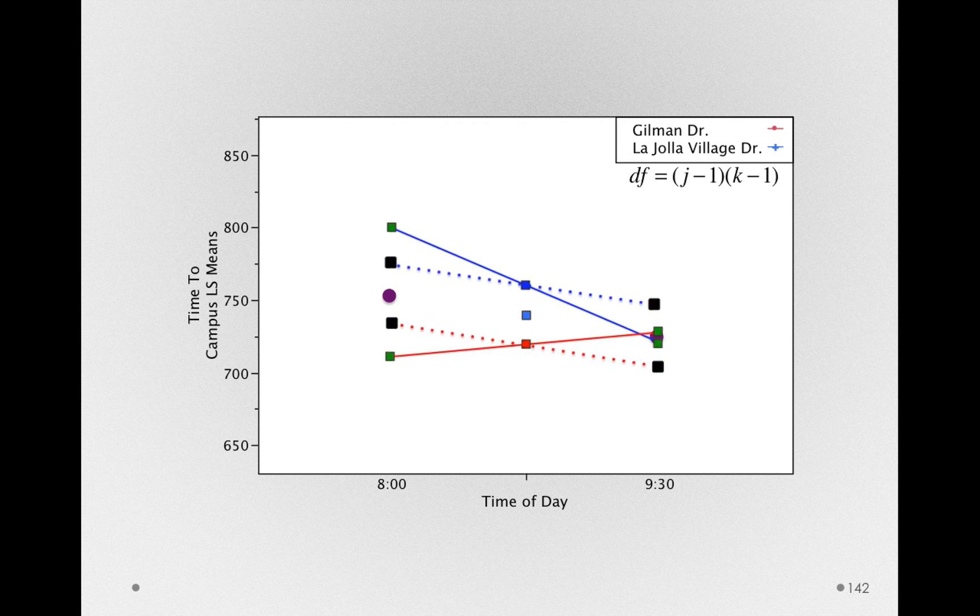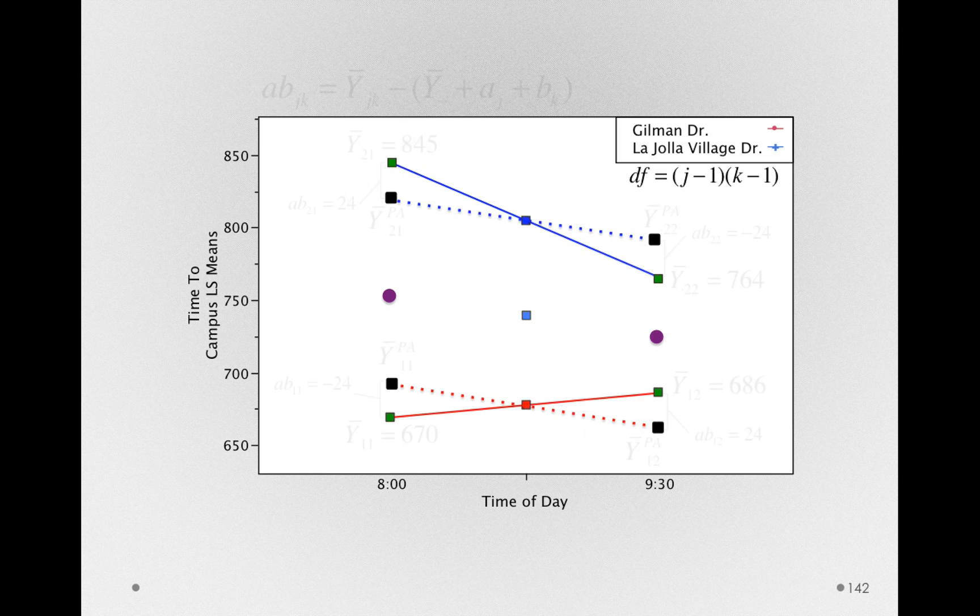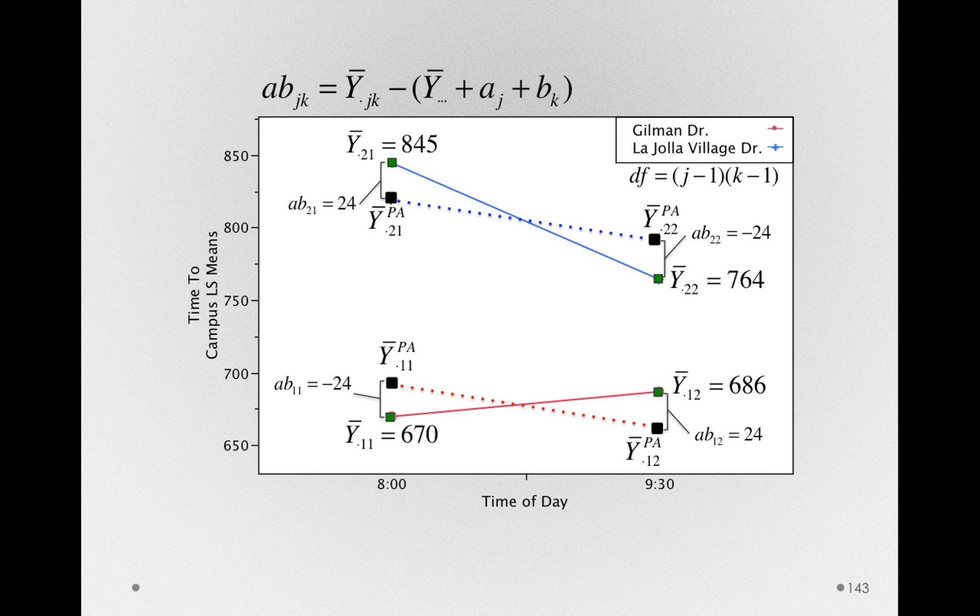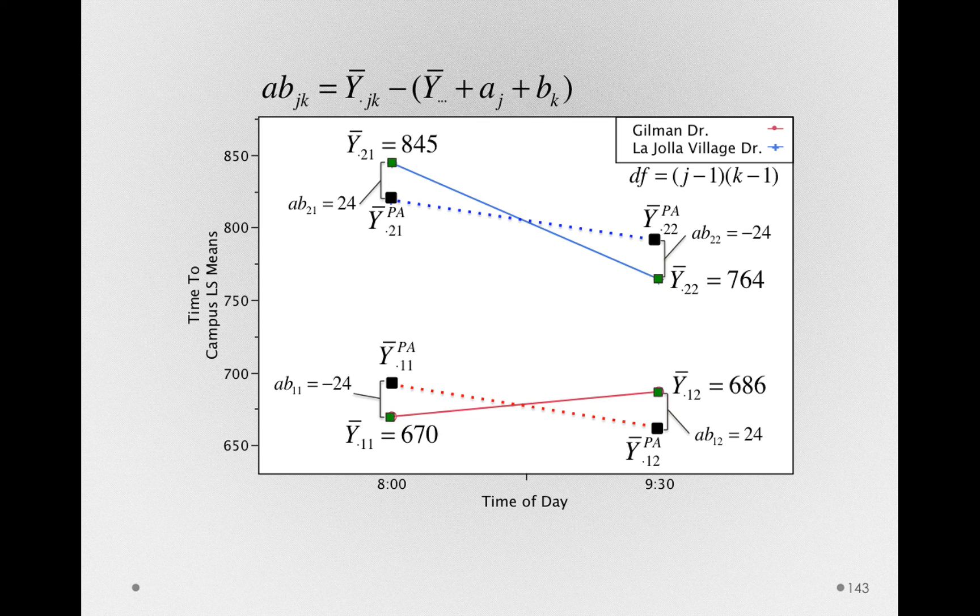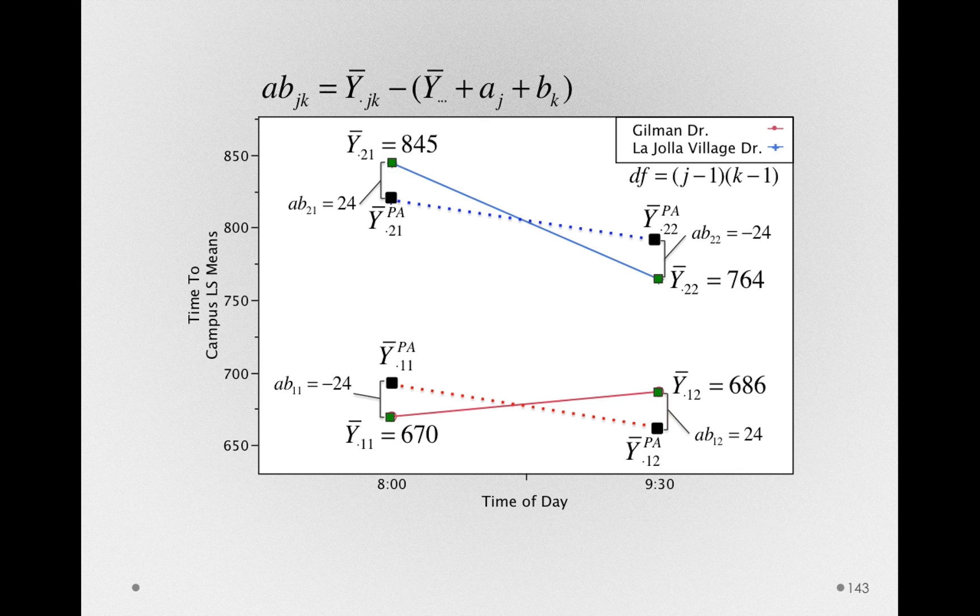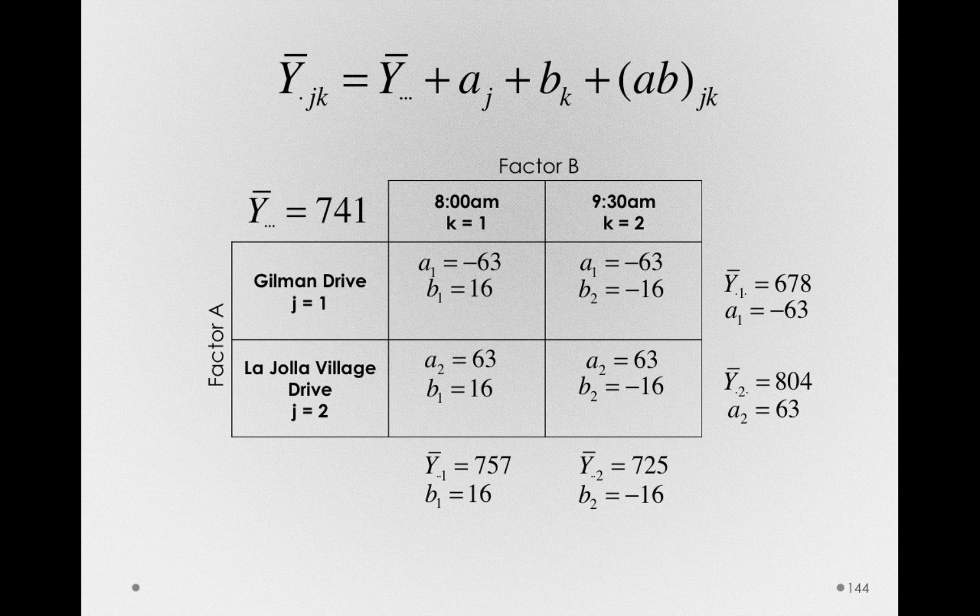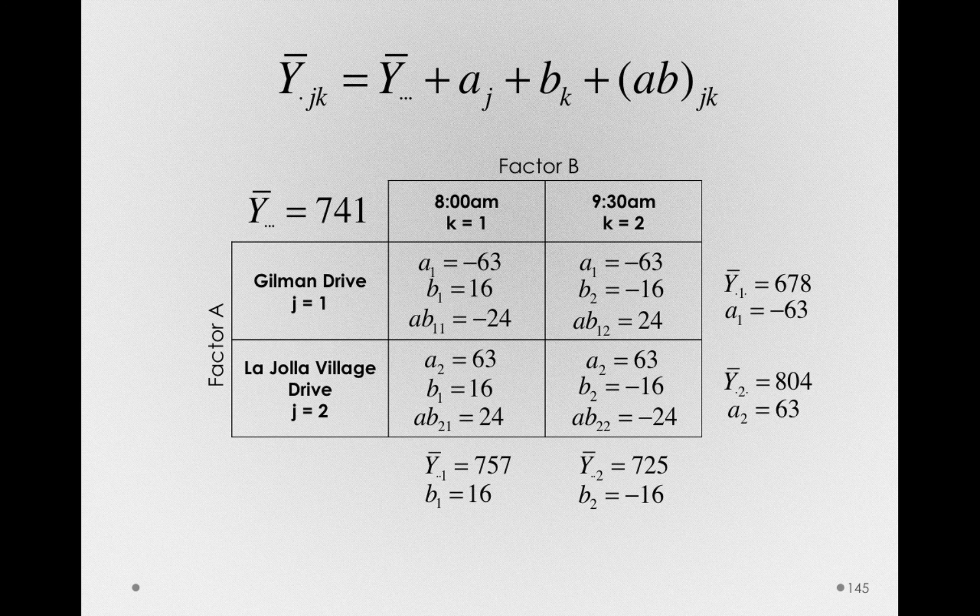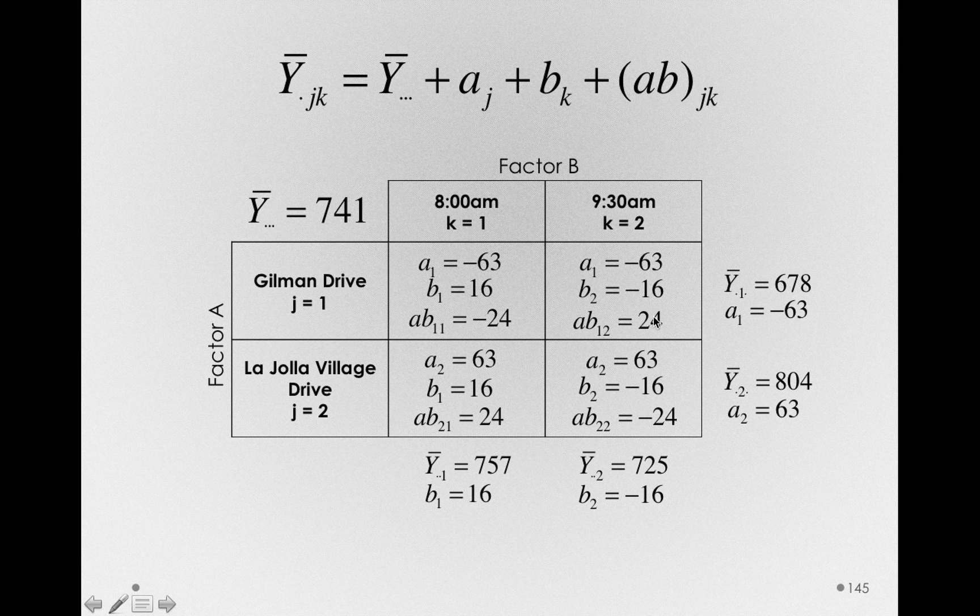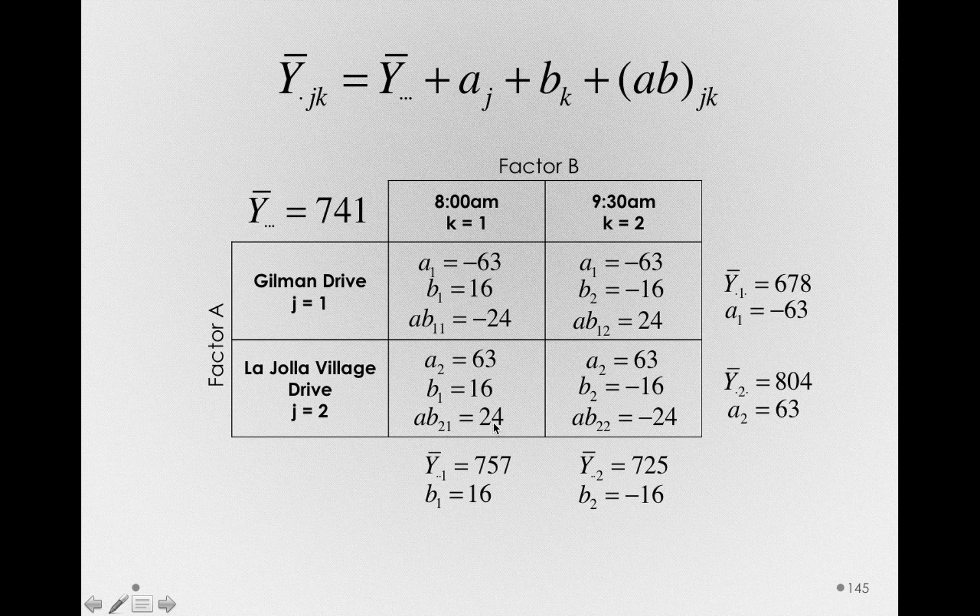So despite the fact that we have these means separated in space because of the route effect, they're really pivoting around a center hard point. So knowing any one of these particular interaction offsets, knowing any one of the AB terms, in fact tells you the other three. So in reality, we're only estimating one independent piece of information for this interaction. So going back to our table, let me add in the AB terms. So the AB11 was negative 24, the AB12 was positive 24, the AB21 was positive 24, and the AB22 was negative 24.